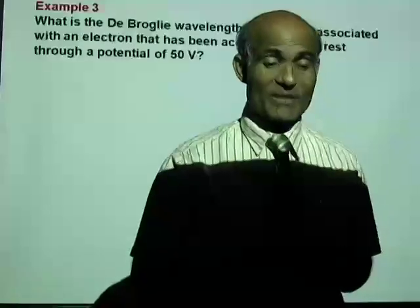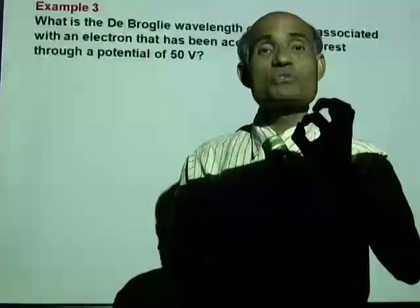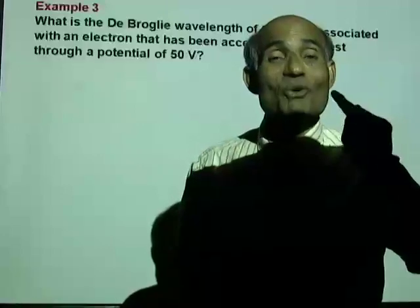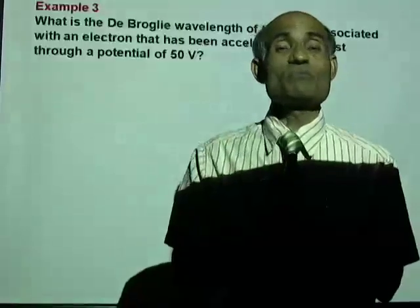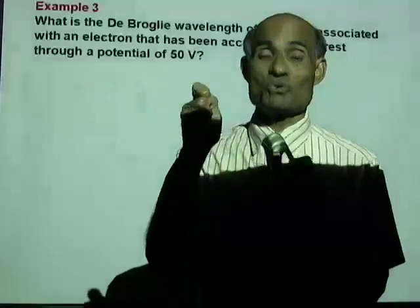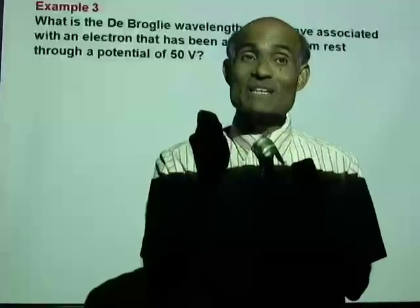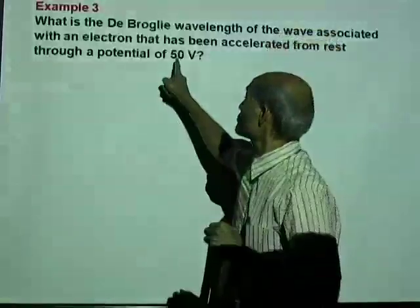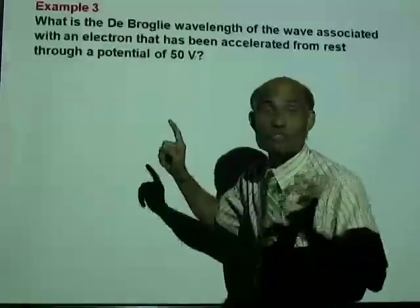And that 1 electron volt is equivalent to the charge on an electron. It is 1.6 times 10 to the negative 19 joules.